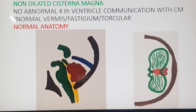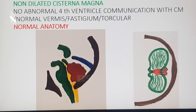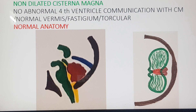Here we have normal anatomy in mid-sagittal view and in axial view. The pons and brainstem are in green, the vermis is in brown, the fourth ventricle is in yellow, the tentorium is in blue, and the clivus and occipital bone are in black. There is a non-dilated cisterna magna and no communication between the fourth ventricle and the cisterna magna. The vermis, fastidium and torcular are normal.